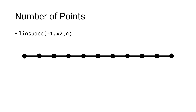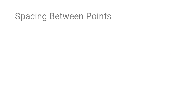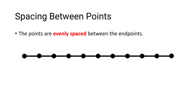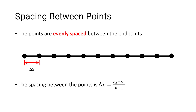The third input argument, n, is the number of points, which has a default value of 100 unless specified by the user. The points are evenly spaced between the two endpoints. The spacing between the points, delta x, is equal to x2 minus x1 divided by n minus 1.